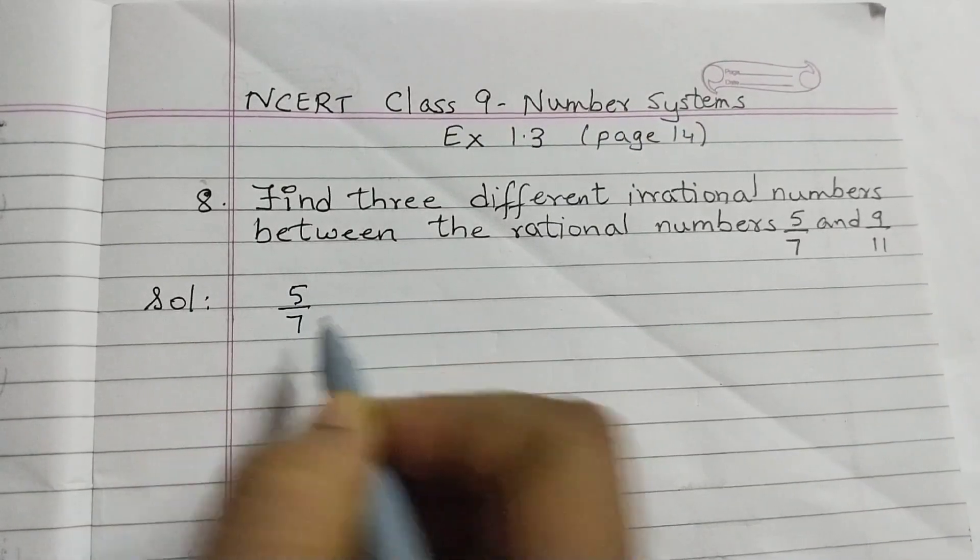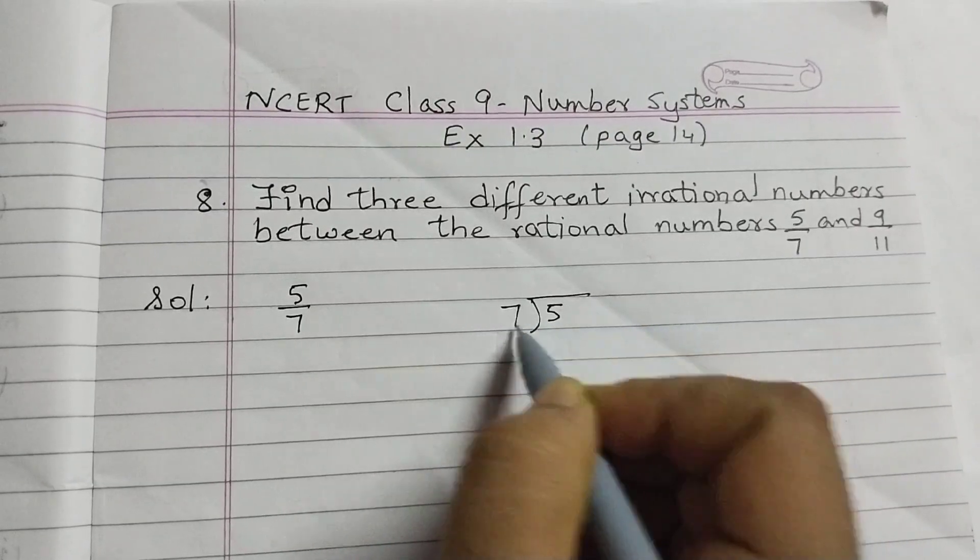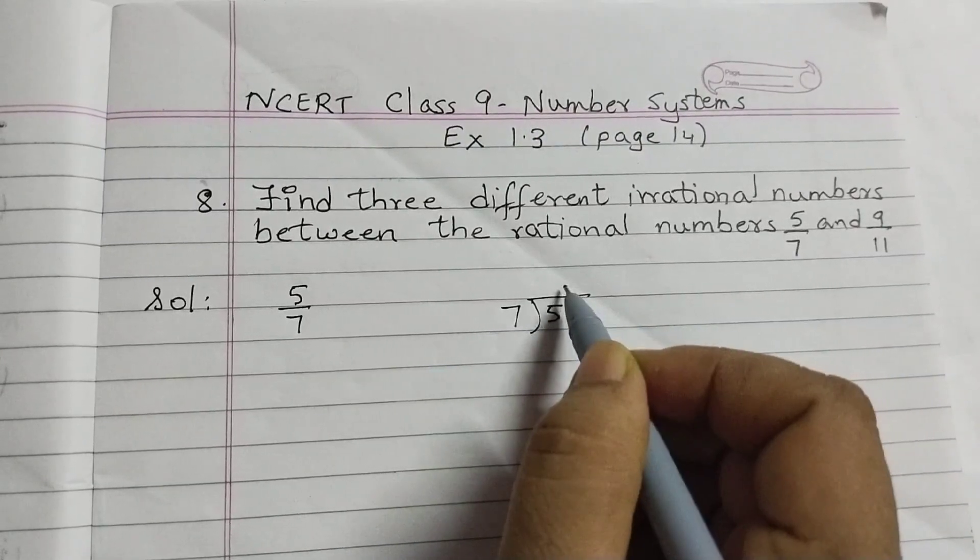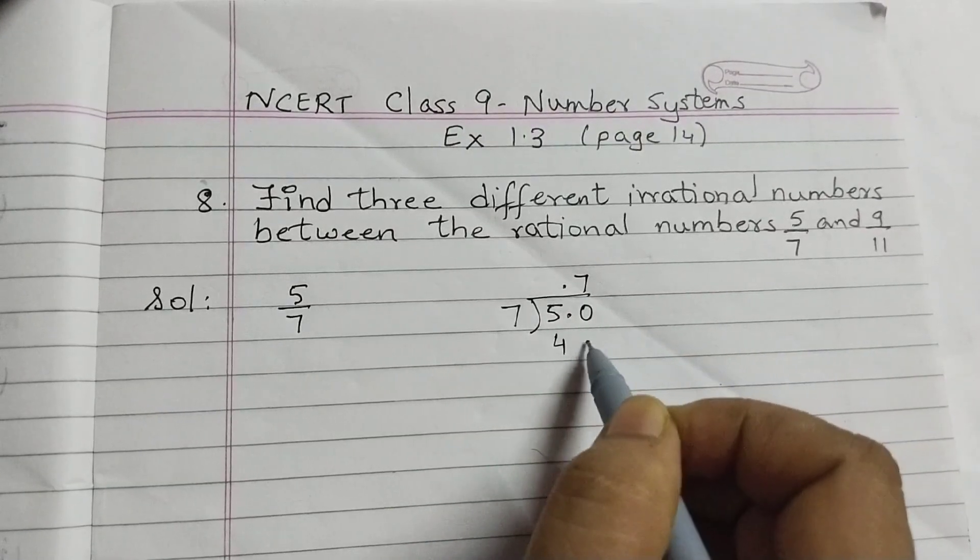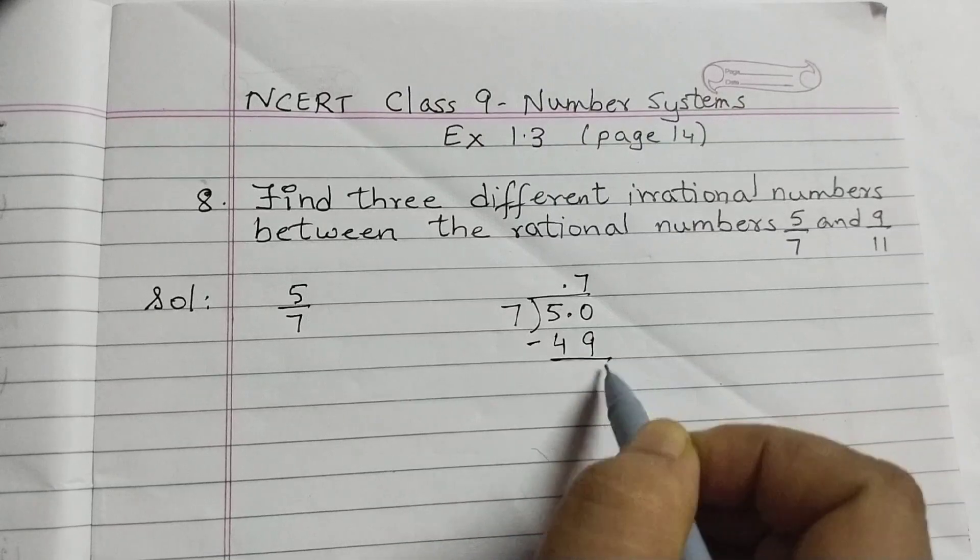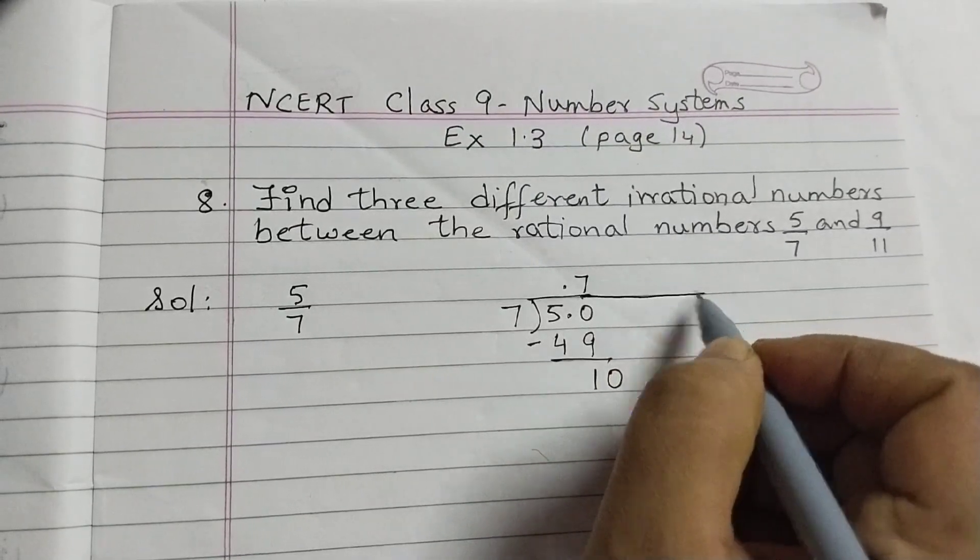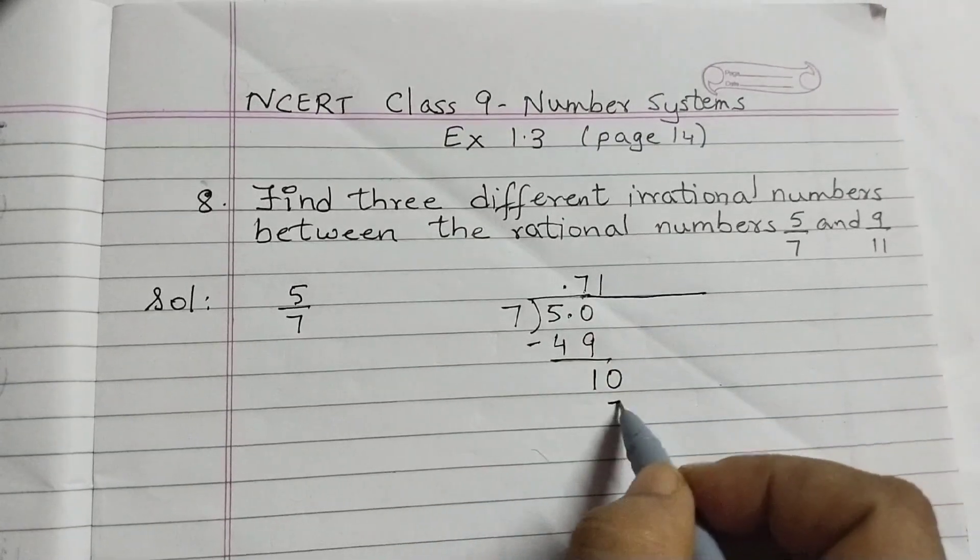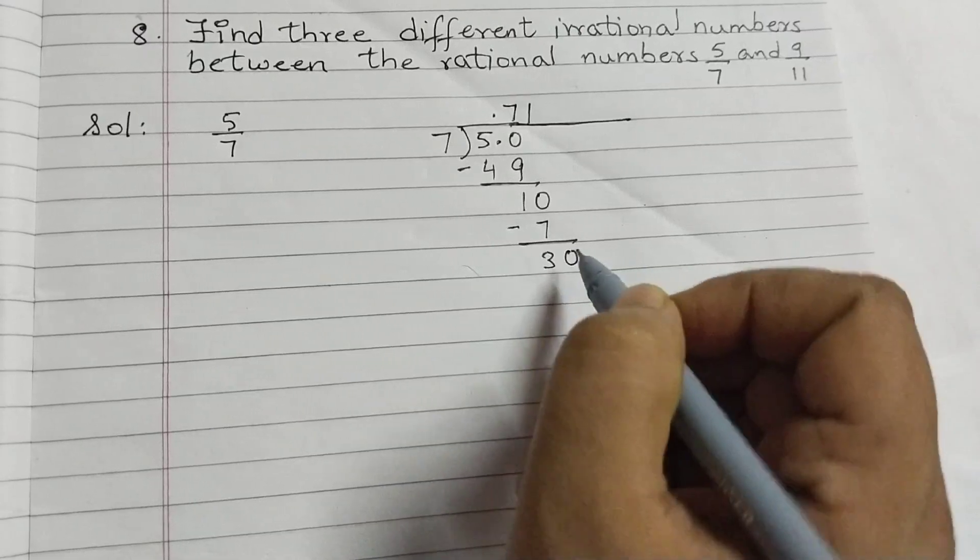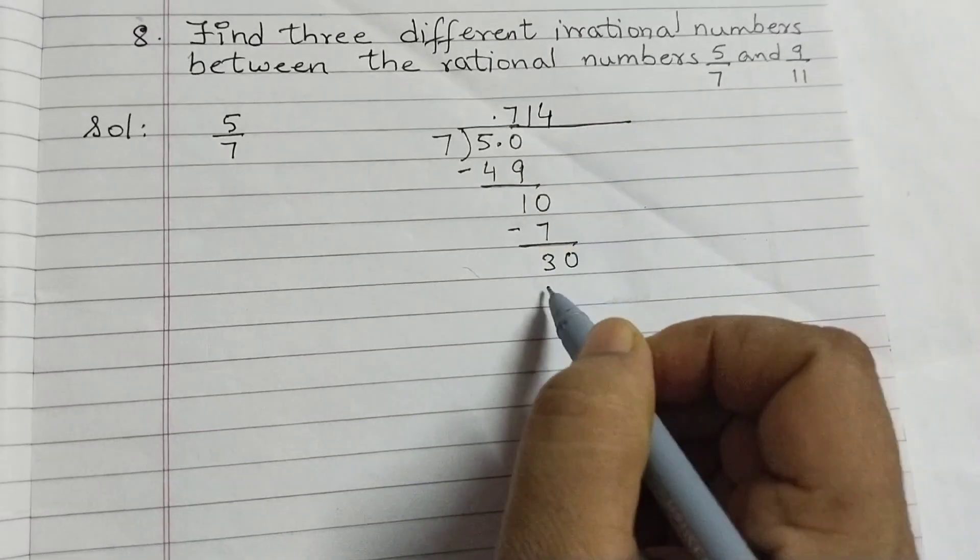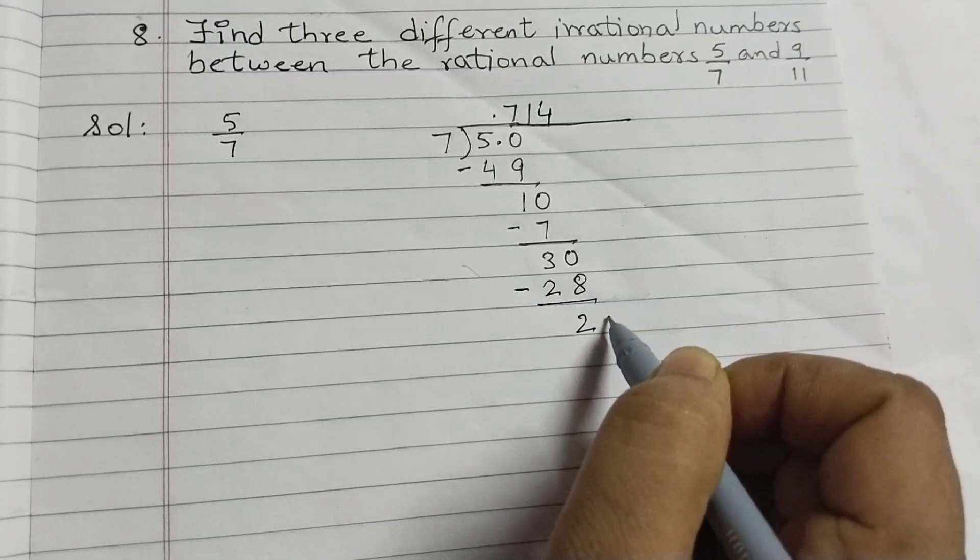5 by 7, 5 divided by 7. Put a decimal point, so point here, 0. 7 into 7, 49, subtract 1, put a 0. 7 ones are 7, subtract 3, put a 0. 7 into 4 is 28, 30 minus 28, 2. Put a 0.